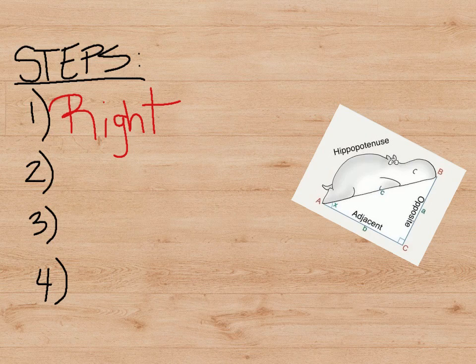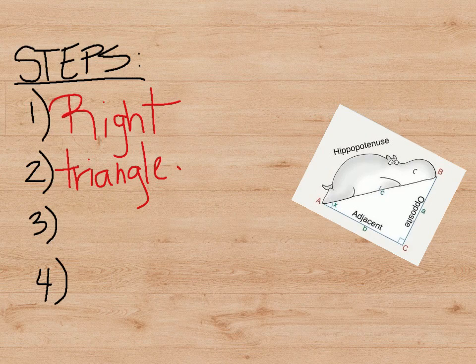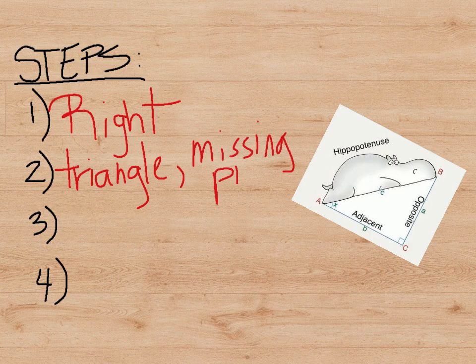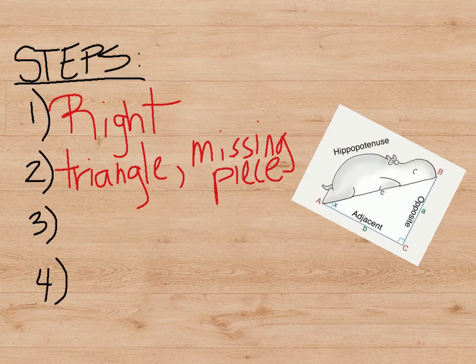The second step: plug in the information from the word problem to the triangle. There will be one missing piece, so name the missing piece or what you're looking for as your X. So plug the information into the triangle, and make sure you have an X in your picture.